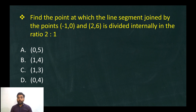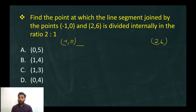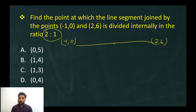Find the point at which the line segment joined by the points minus 1 comma 0 and 2 comma 6 is divided internally in the ratio 2 is to 1. One line segment has endpoints minus 1 comma 0 and 2 comma 6, divided internally in ratio 2 to 1.